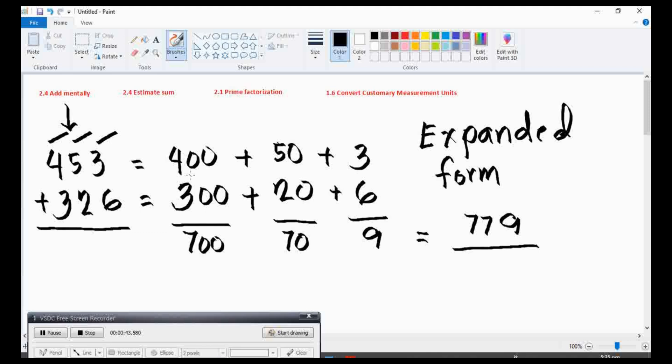So let us put 400 plus 50 plus 3, plus the other addend: 300 plus 20 plus 6.